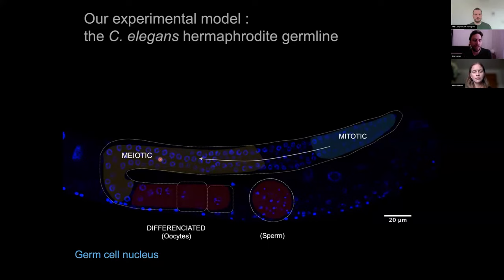Usually, C. elegans in the lab are maintained as hermaphrodites, which means that spermatogenic and oogenic differentiation programs occur in the same animal, but sequentially in time.